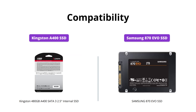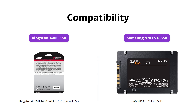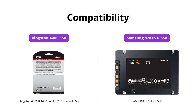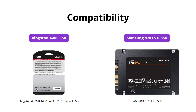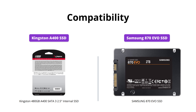Samsung 870 EVO SSD is compatible with major host systems and applications, including chipsets, motherboards, NAS, and video recording devices. It has been extensively tested for compatibility, making it one of the most compatible SSDs on the market. Kingston A400 SSD, on the other hand, has a SATA Rev. 3.0, 6 gigabit per second interface with backward compatibility to SATA Rev. 2.0.